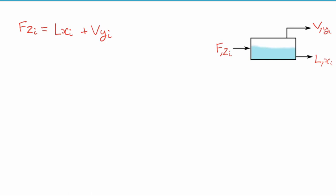As we know, this is a single stage equilibrium method. The composition of the vapor and the composition of the liquid must be in equilibrium with each other. For that equilibrium we can use modified Raoult's law, so the total pressure times the composition in the vapor phase equals the composition in the liquid phase times the activity coefficient for that component times the saturated vapor pressure.